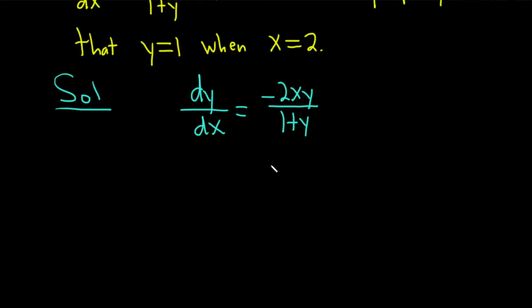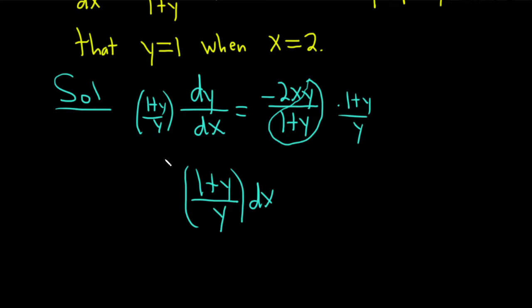So to do that, I'm just going to multiply by dx, and then multiply by the reciprocal of this. So this is going to come over here on the left. It's going to look like 1 plus y over y dy. So multiplying by 1 plus y over y, you see these go away.